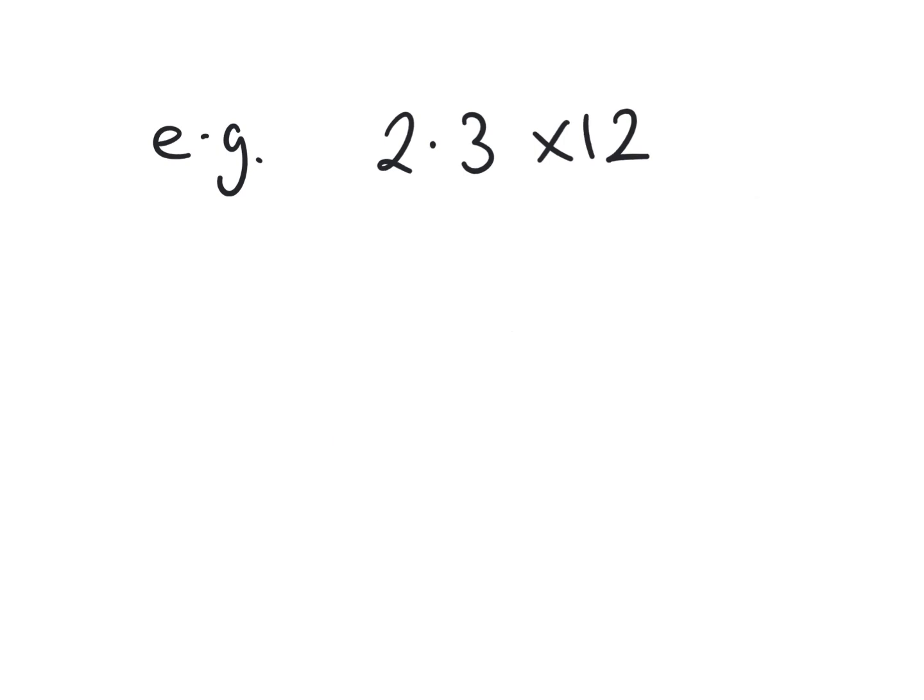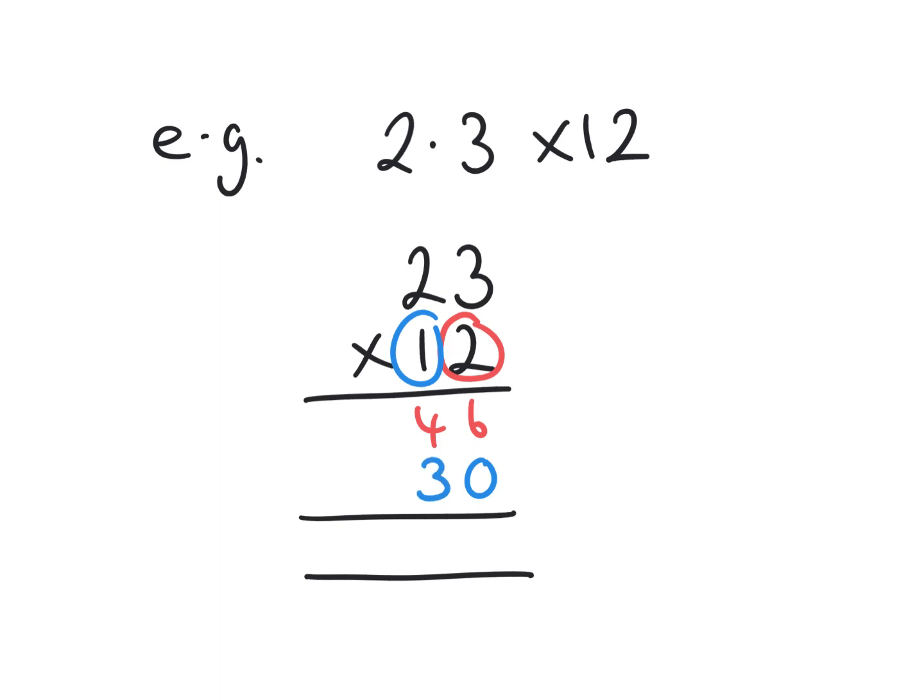The second option available to us for this calculation is to look at a standard long multiplication. So first thing to do is to remove the decimal point, which is 23 times 12. We've got our units first: 2 times 3 is 6, 2 times 20 is 40. Then we're going to multiply by the tens column, so we're going to take the zero from the 10 and make it our magic zero down here. One lot of 3 first of all, and then one lot of 2.